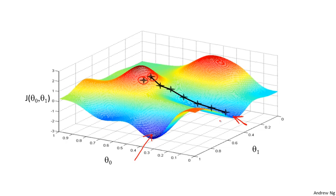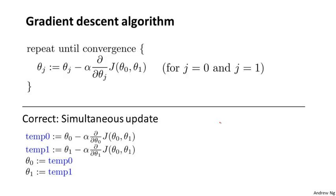So that's the intuition in pictures. Let's look at the math. This is the definition of the gradient descent algorithm. We're going to repeatedly do this until convergence: we update parameter θⱼ by taking θⱼ and subtracting from it α times a derivative term. There are a lot of details in this equation. First, the notation — colon-equals — I'm going to use colon-equals to denote assignment, the assignment operator. So if I write a := b, it means take the value in b and use it to overwrite whatever value is in a.